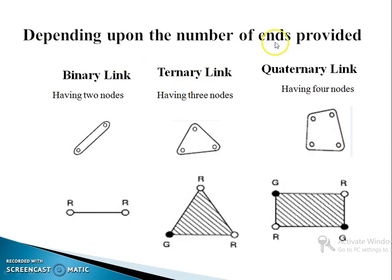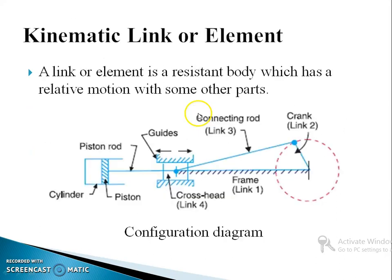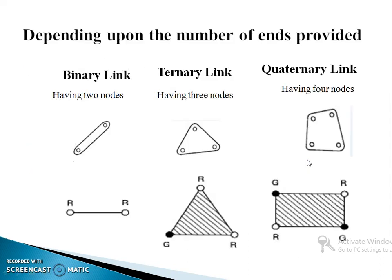So, depending upon the number of ends provided, it can be named as binary link, ternary link and quaternary link. For that, I will go back to the previous figure. Consider this crank. One end of this crank, it is attached to the connecting rod. The other end is attached to the crank shaft. So, if I isolate this crank, I can represent the crank like this. One member with two nodes. I can attach one link here, another link here. So, this type of member which is having two nodes, it is named as a binary link.